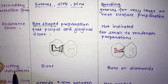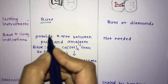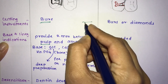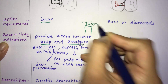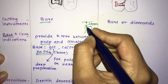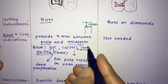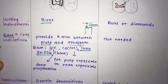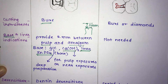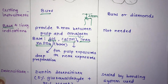The cutting instrument for amalgam is burs; for composite, burs or diamonds are used. Regarding base and liner indication in amalgam: if the distance between the pulp and the preparation is less than 2 mm, a base such as zinc phosphate is indicated. If the distance is less than 1 mm, a liner or varnish is used — calcium hydroxide for near-exposure cases, and glass ionomer cement liner for deep preparations.